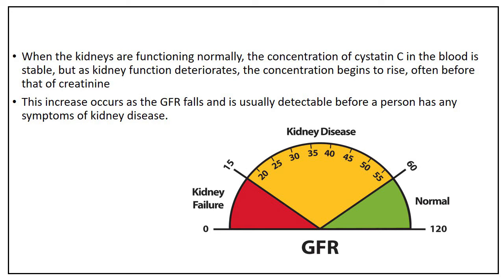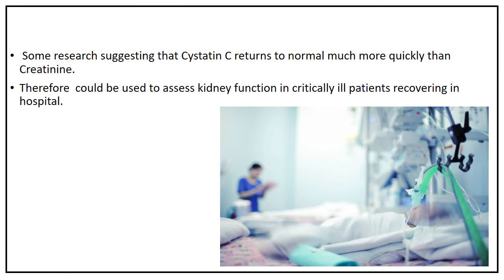When the kidneys are functioning normally, the concentration of Cystatin C in the blood is stable, but as kidney function deteriorates, the concentration begins to rise — often before that of creatinine. This increase occurs as the GFR falls and is usually detectable before a person has any symptoms of kidney disease. Some research suggests that Cystatin C returns to normal much more quickly than creatinine, and therefore could be used to assess kidney function in critically ill patients recovering in hospital.